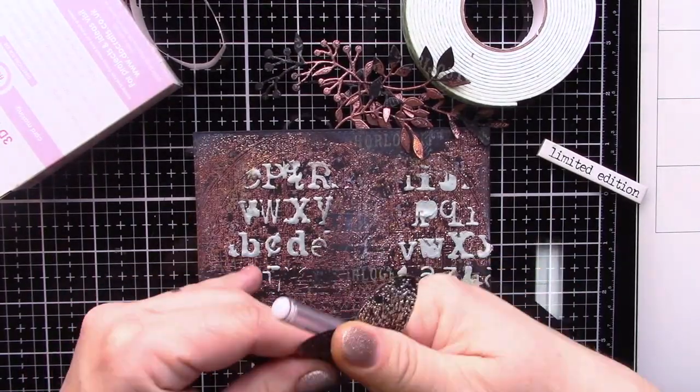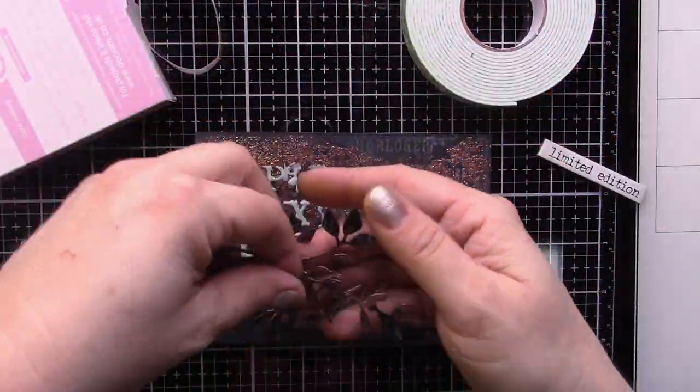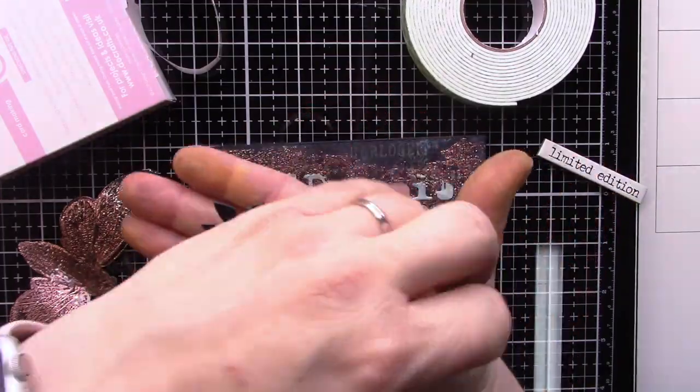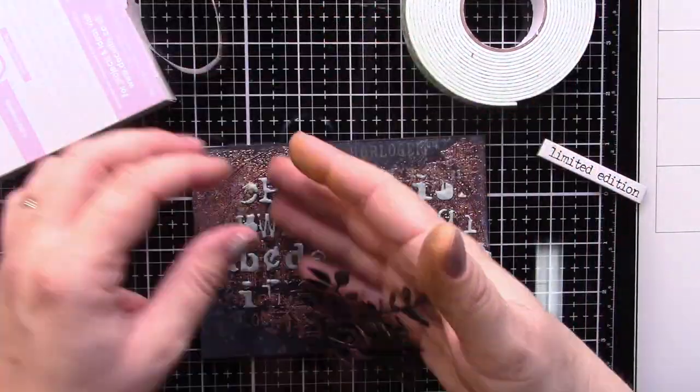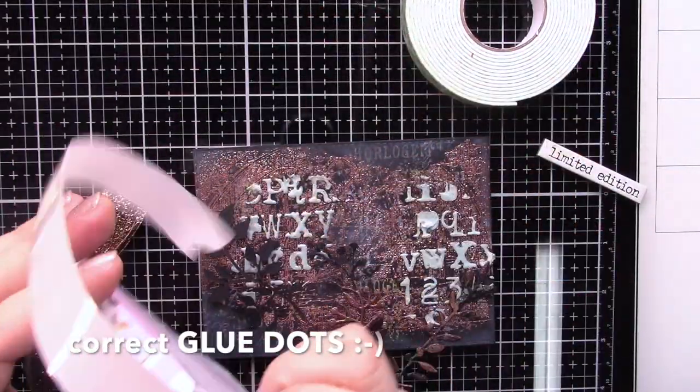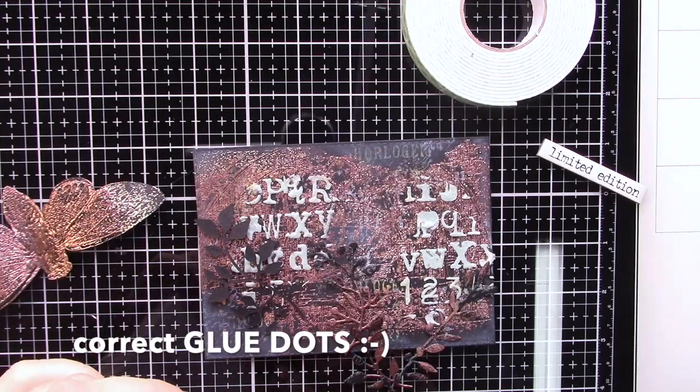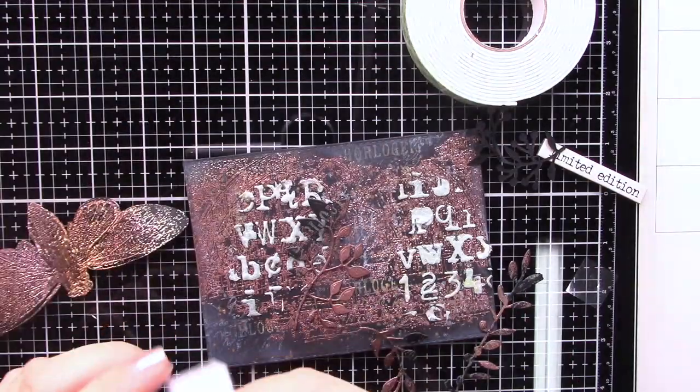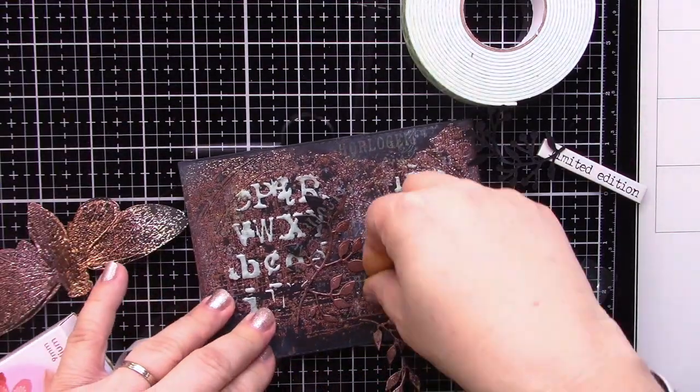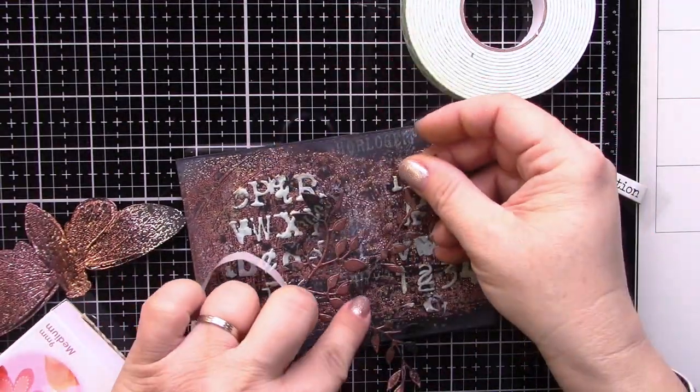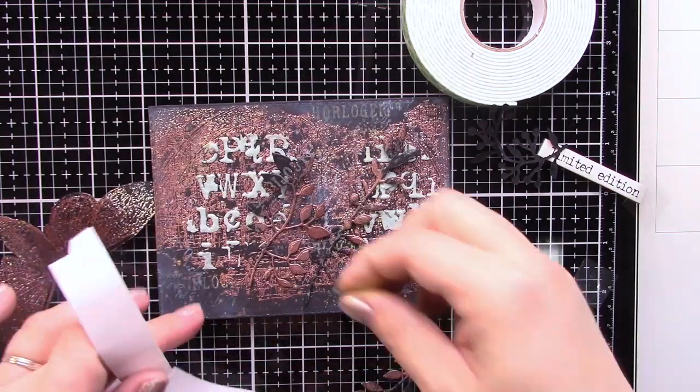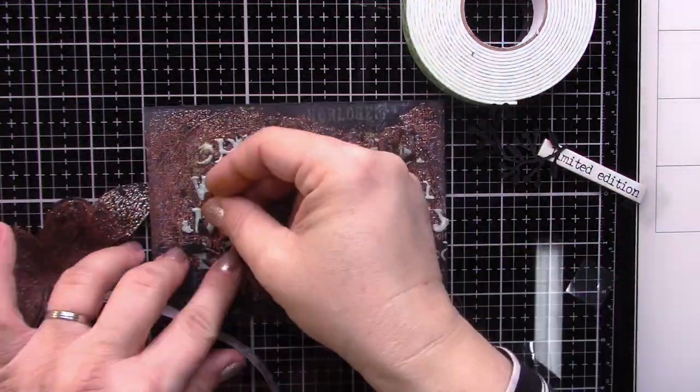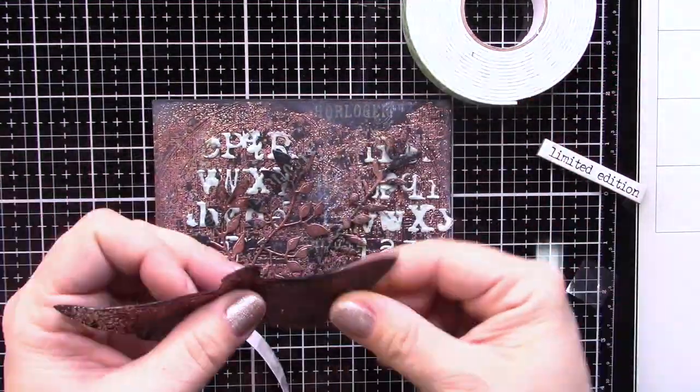It's time to finish my card. I glue the panel onto the note card. I will be gluing my die-cut branches. I'm using 3D dots because they are quite great and elastic and hold things very well.